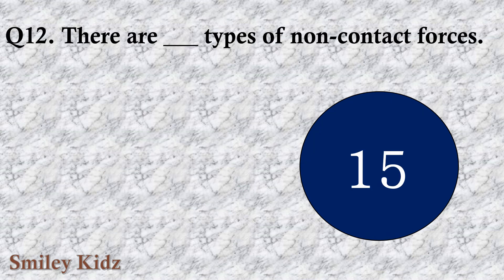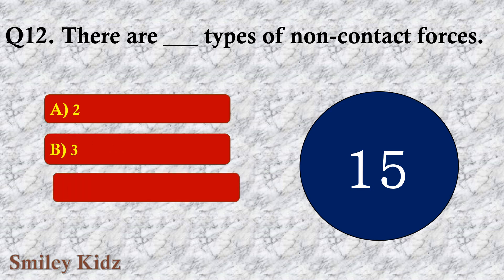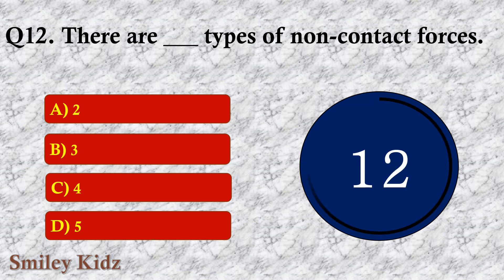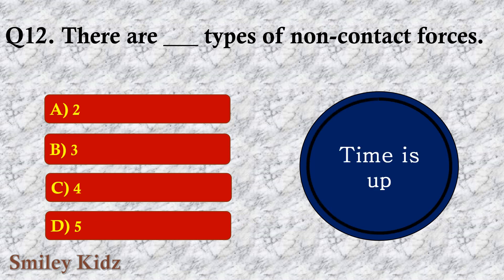Question number twelve: There are dash types of non-contact forces. The options are A. 2, B. 3, C. 4, or D. 5. The right answer is option B — 3. There are three types of non-contact forces.